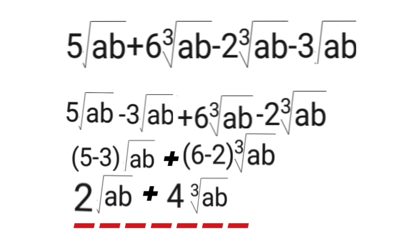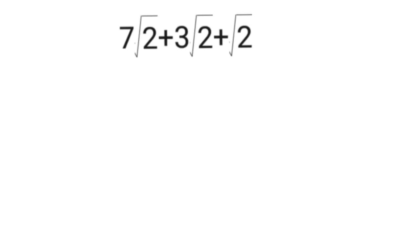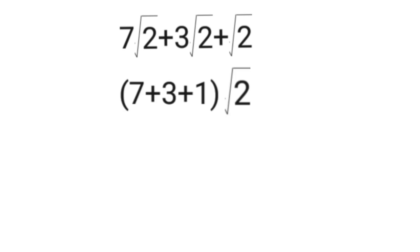For number 3, we have 7 square root of 2 plus 3 square root of 2 plus square root of 2. They have the same index and the same radicand, so we combine like terms by adding their coefficients. Note that square root of 2 has an implied coefficient of 1. So 7 plus 3 plus 1 equals 11. The final answer is 11 square root of 2.